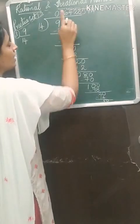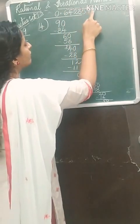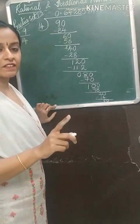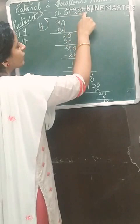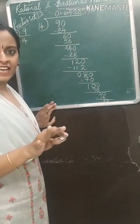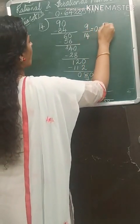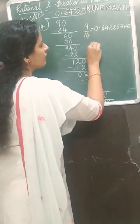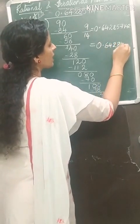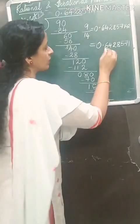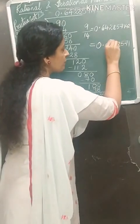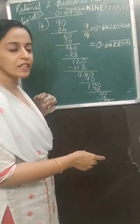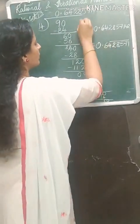The quotient is 0.6428571 and it repeats: 4, 2, 8, 5, 7, 1 recurring. Only one digit — 6 — is not getting repeated. After 6, the digits 4, 2, 8, 5, 7, 1 keep repeating. So we will not put the bar above 6; we will put the bar from 4 till 1 — over digits 4, 2, 8, 5, 7, 1. The answer is 9 upon 14 equals 0.6 with bar over 428571.